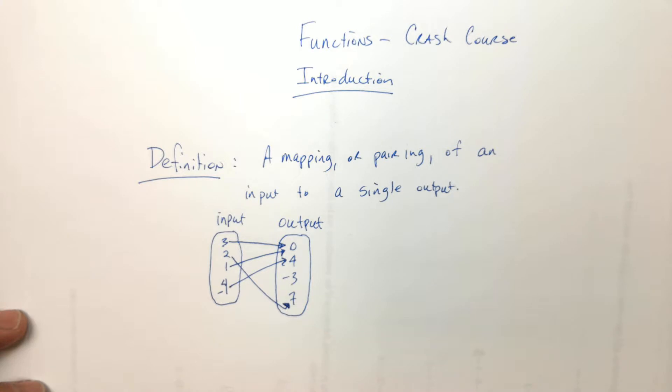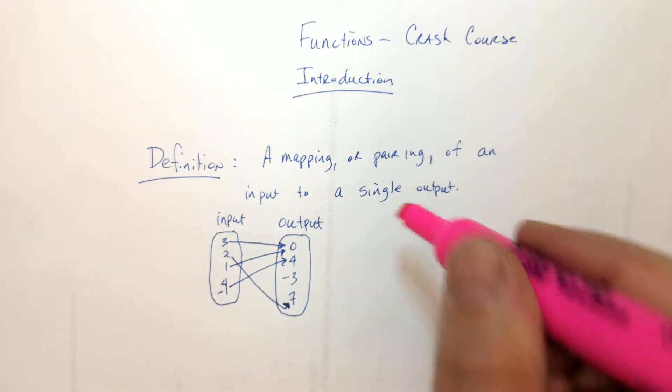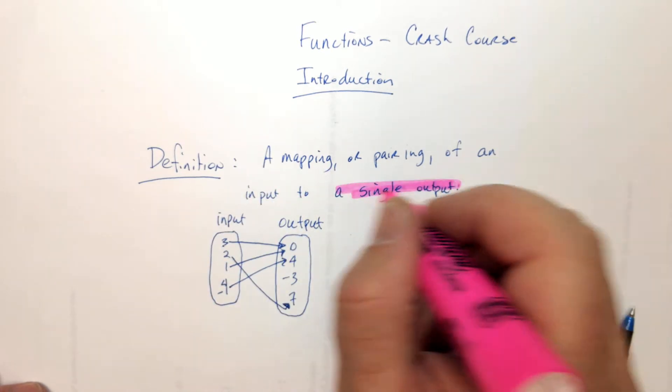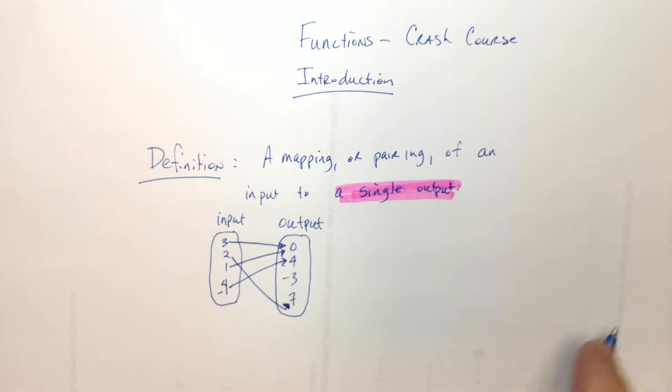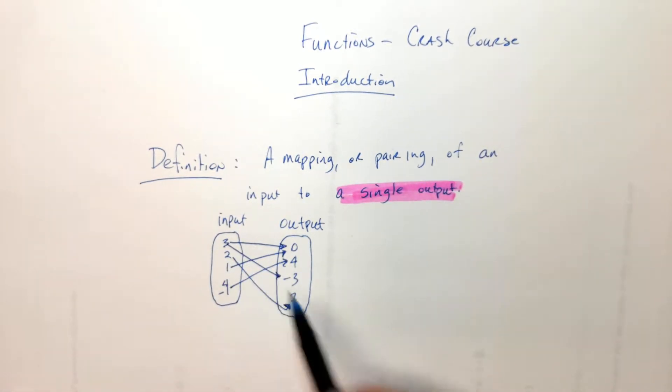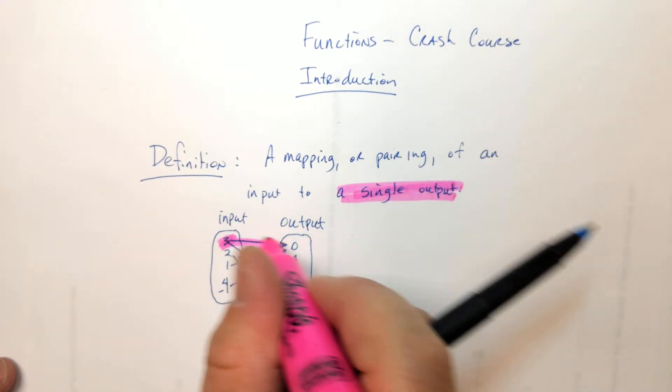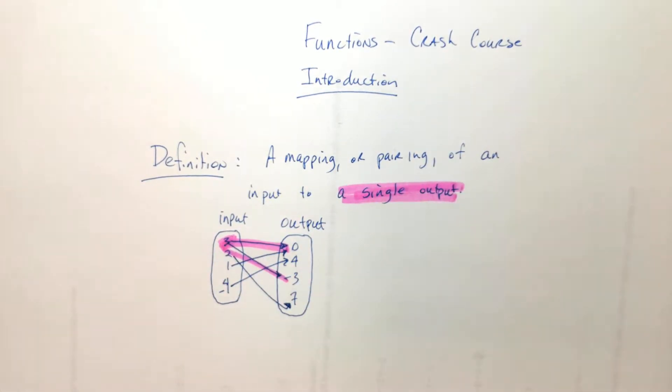Here's what would make it not a function, because the key thing right here is - I have installed my highlighter. Each input goes to a single output. So I'm going to change this to be a not function. Now it's a not function, because 3 is an input and it goes to 2 outputs, so it's no longer a function.